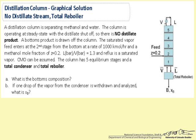The ratio L̄ to V̄ is 1.3 and reflects a saturated vapor feed. CMO can be assumed. The column has 5 equilibrium stages and a total condenser and total reboiler.